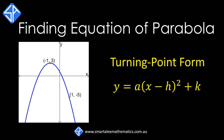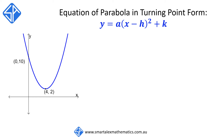In this video, we're going to look at another method for finding the equation of a parabola using turning point form. Another way to represent the equation of parabolas is y = a(x - h)² + k. The values of h and k come from the vertex of the parabola, and a is the dilation factor, which tells us how wide or narrow the parabola is.